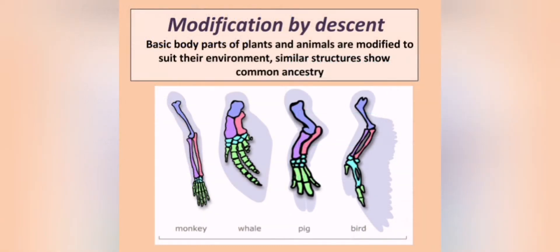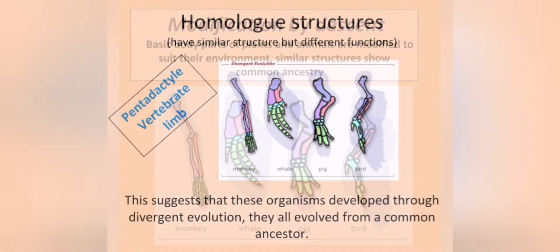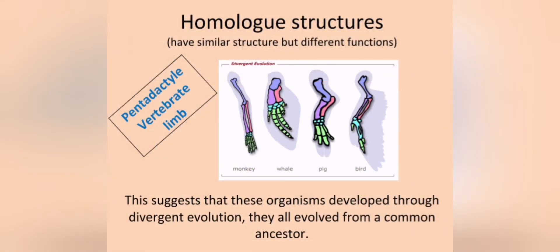Besides the fossil record, evolutionists also use a phenomenon called modification by descent as evidence of evolution. If we look at living or even fossilized remains of any animal that had a pentadactyl limb, it seems they all have the same basic bones. In this picture we're comparing the arm of a monkey, the flipper of a whale, a pig's front leg, and the wing of a bird. The bones inside these four structures are color-coded — they are homologous structures.